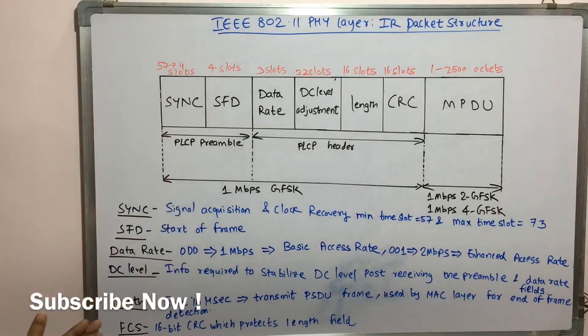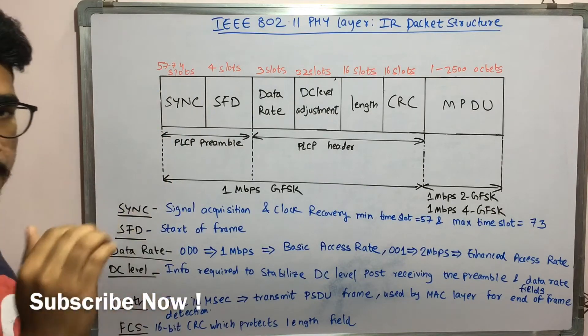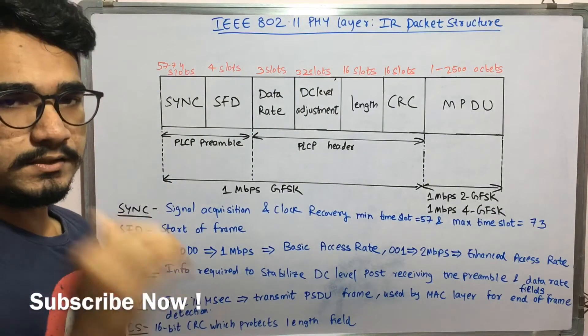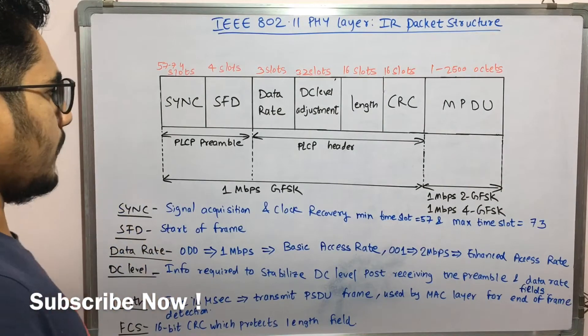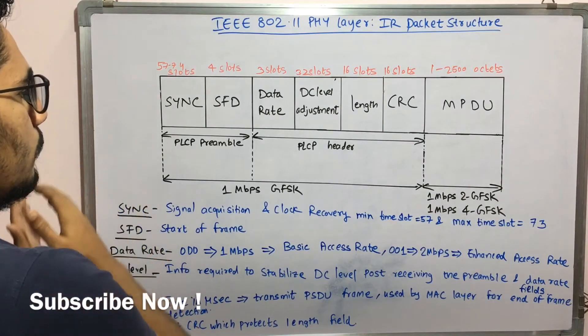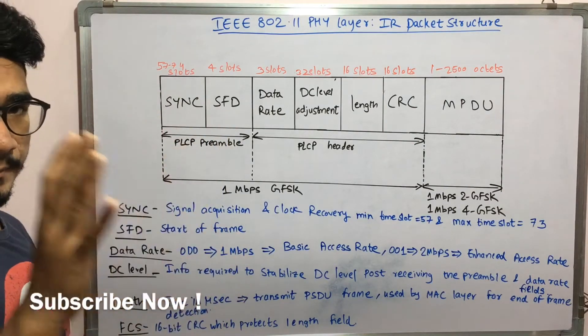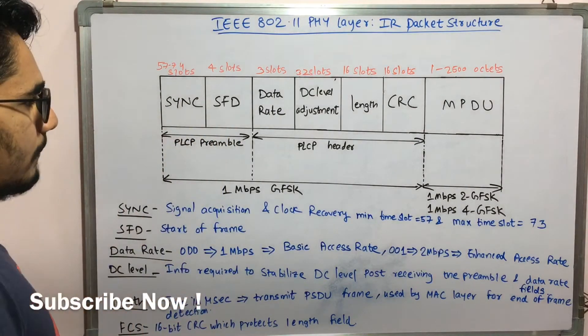Next we have four slots which are dedicated for the SFD — that is the Start Frame Delimiter — which marks the start of the frame. Together, the SYNC and SFD constitute or form the PLCP preamble.